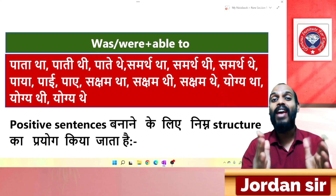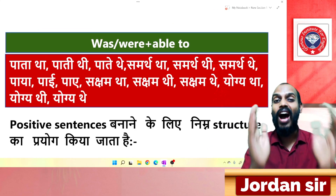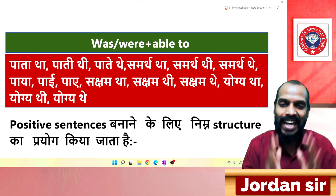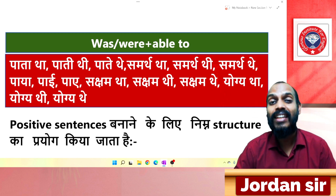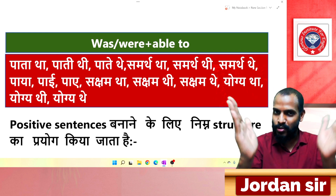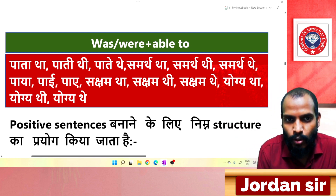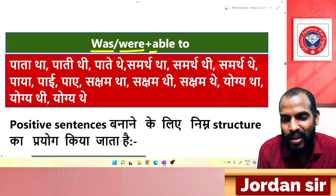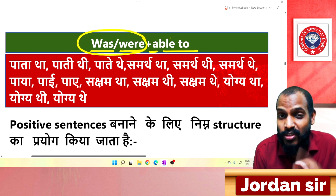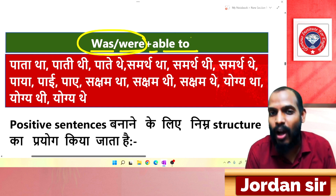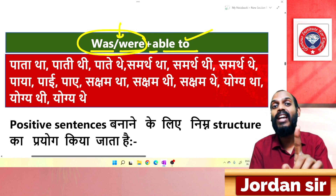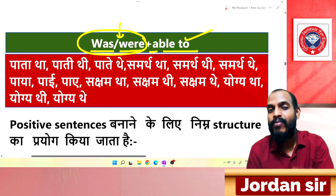Hello friends, my name is Jordan and I am an English trainer. Today I will tell you how the past tense can be used with 'able to'. Last time I taught you about the present tense. Today we will cover the past tense, which uses 'was' and 'were'.